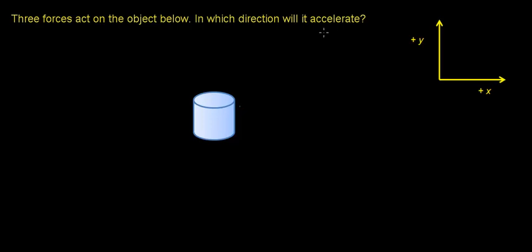In this video, we're going to use Newton's second law of motion to try to figure out which direction an object will accelerate if it's subject to three forces in the horizontal direction. We're looking for the object's acceleration, and this is going to be our coordinate system. We're only going to consider forces acting in the x direction for this example.